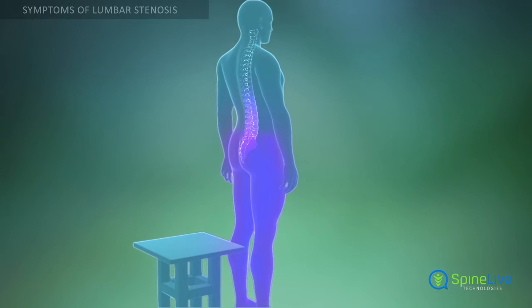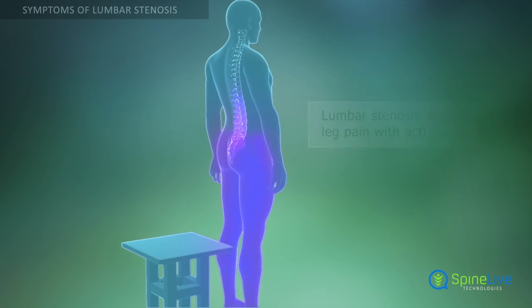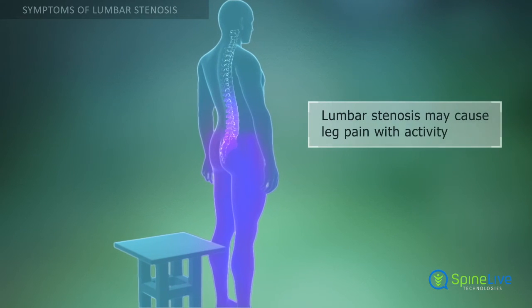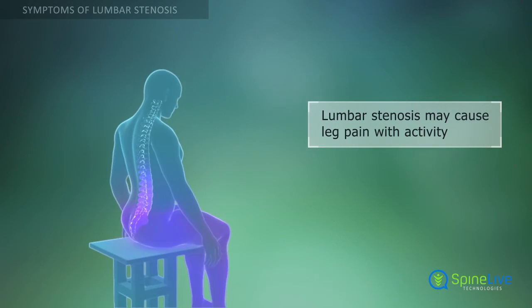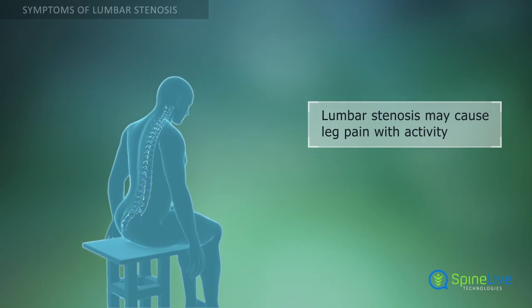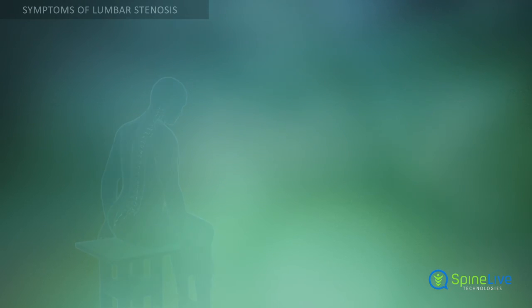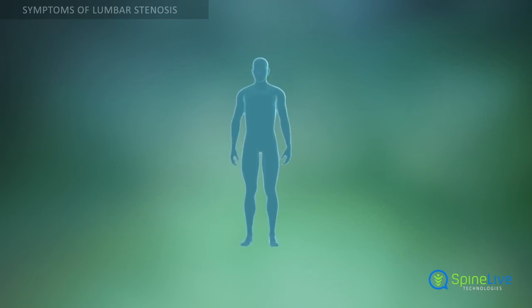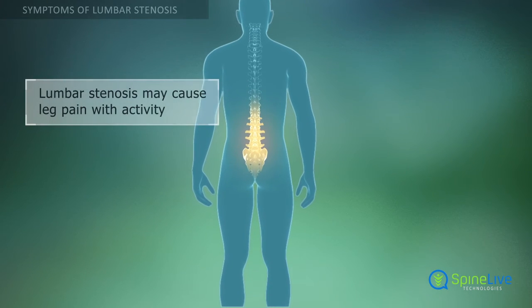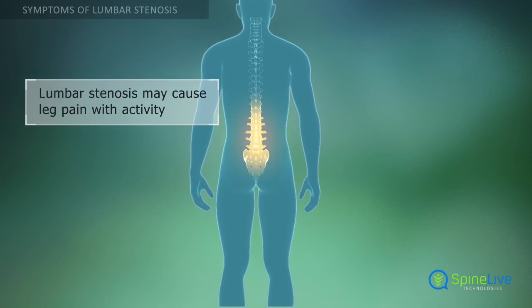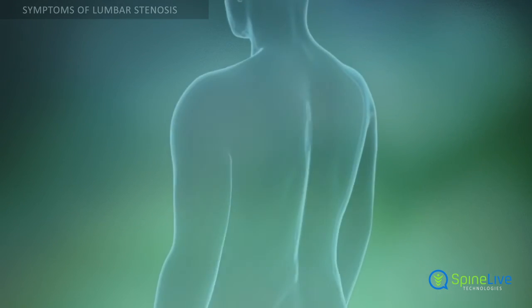The symptoms of lumbar stenosis — such as leg pain, weakness, numbness, and cramping — often increase with activity. Bending over or sitting removes pressure and often provides pain relief. In mild lumbar stenosis, pain may be located only in the lumbar region of the spine.